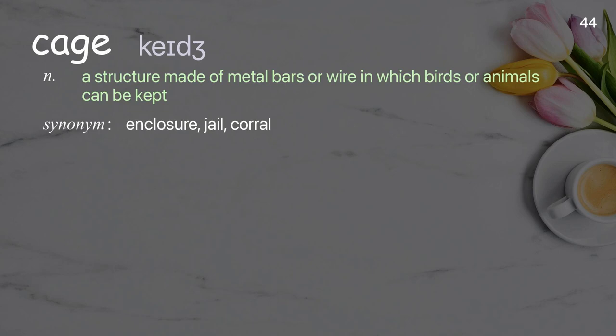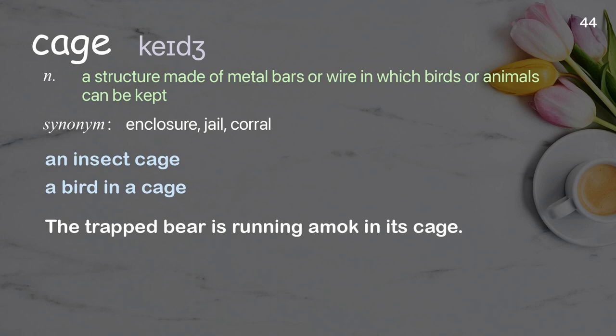Cage. A structure made of metal bars or wire in which birds or animals can be kept. Examples: an insect cage, a bird in a cage. The trapped bear is running amok in its cage.